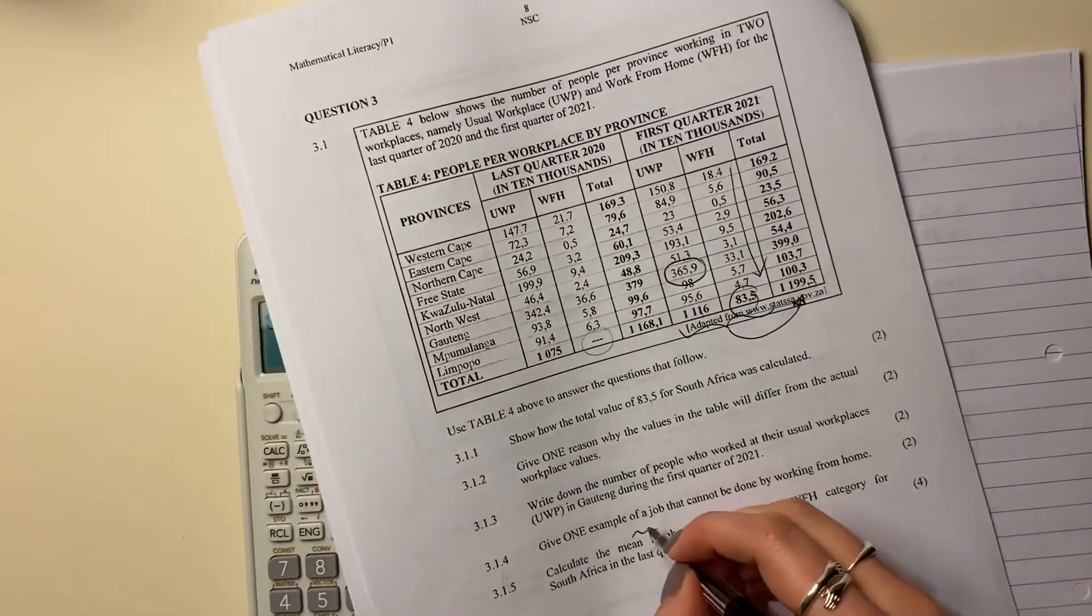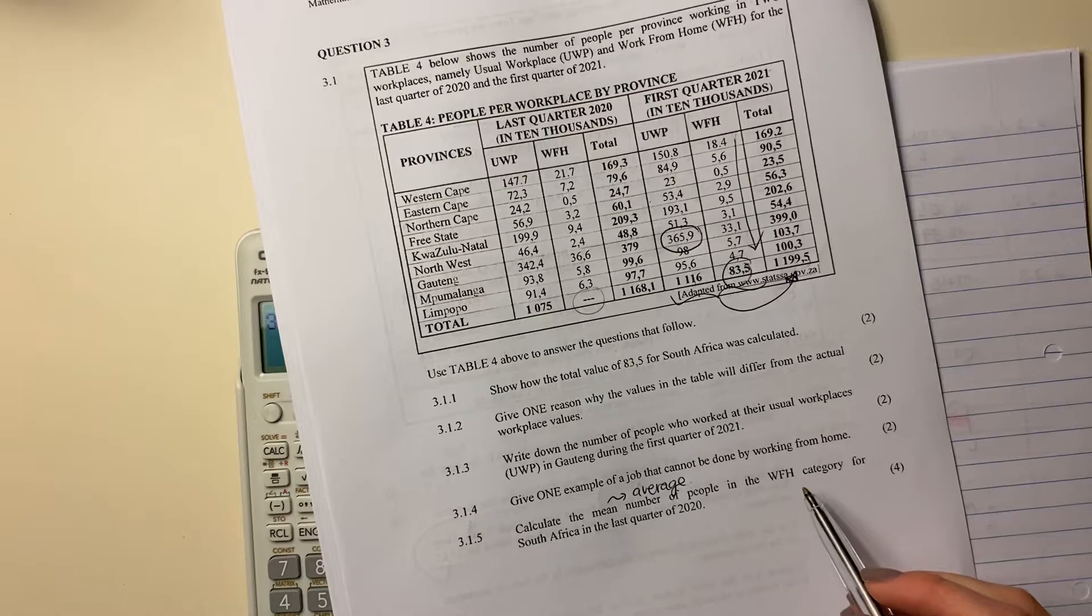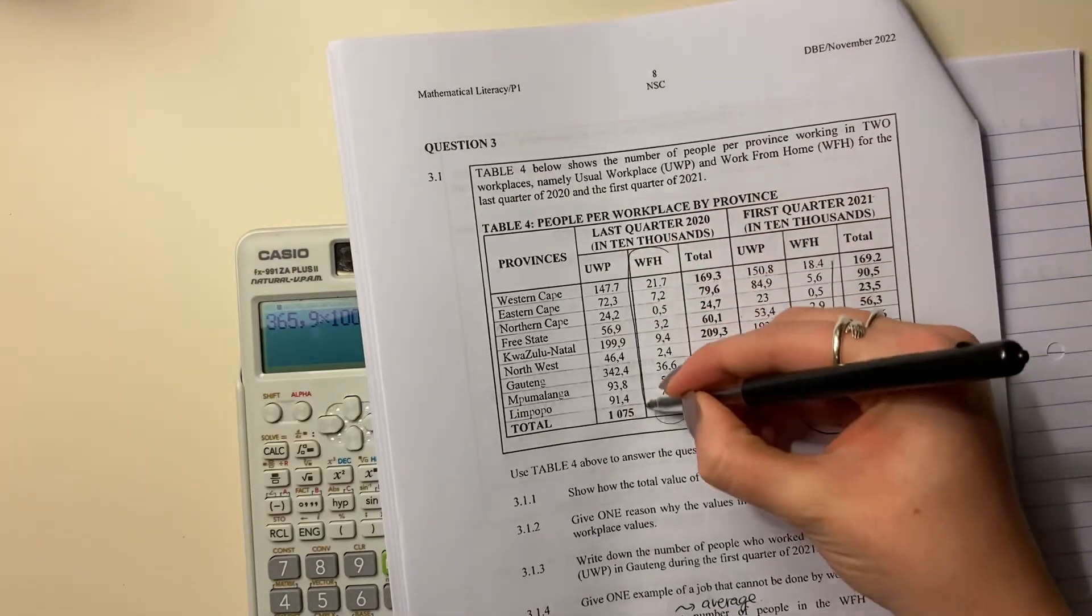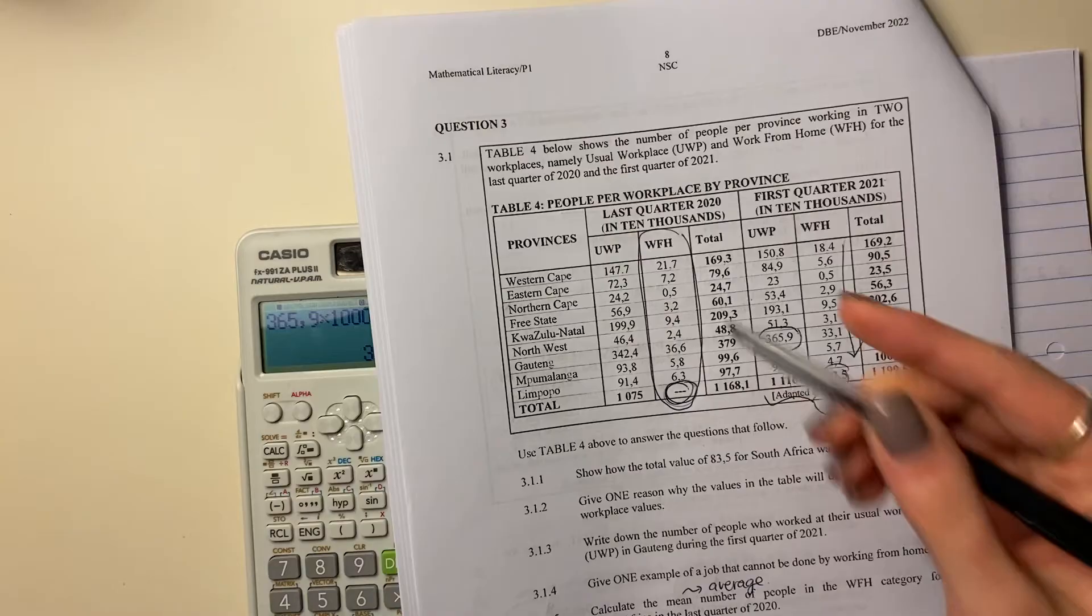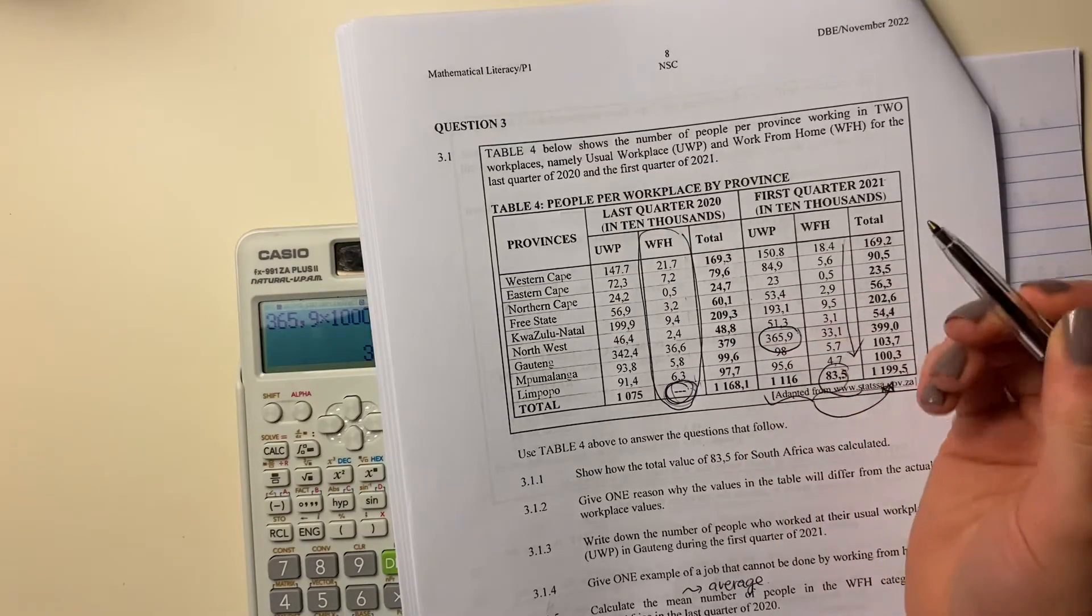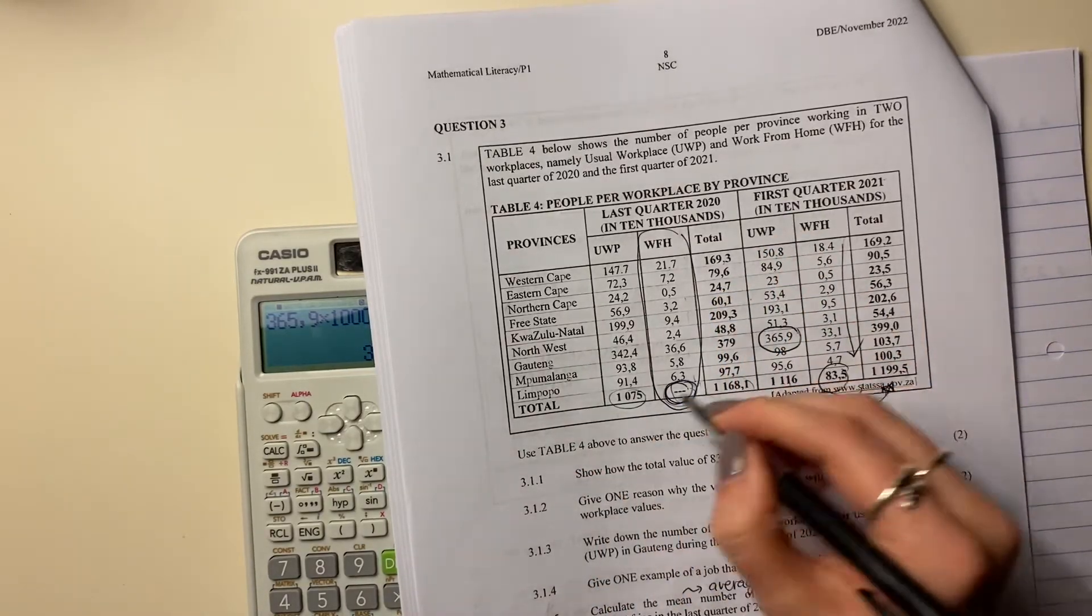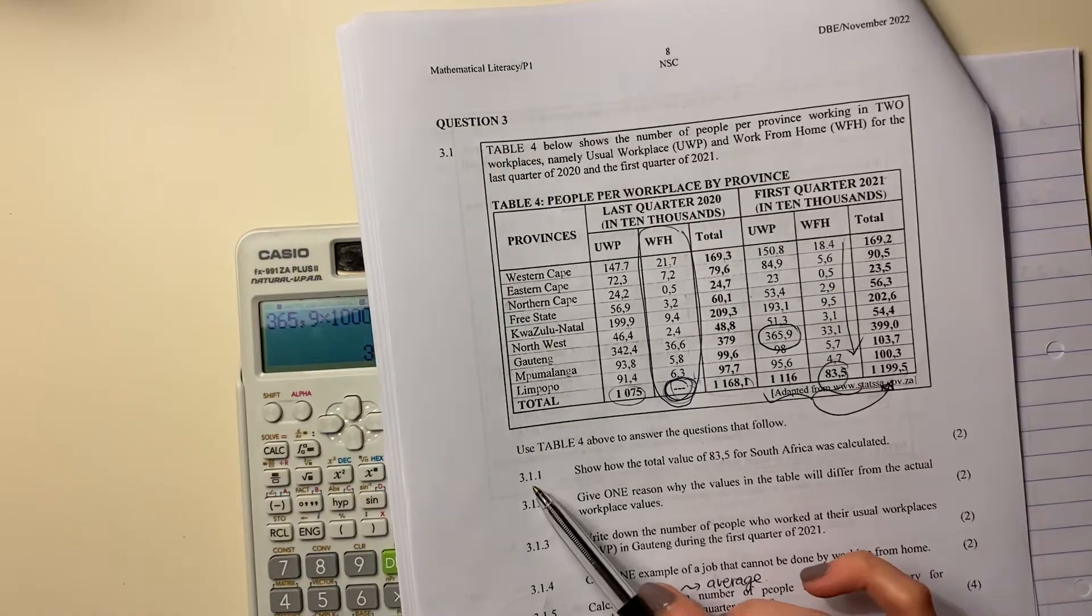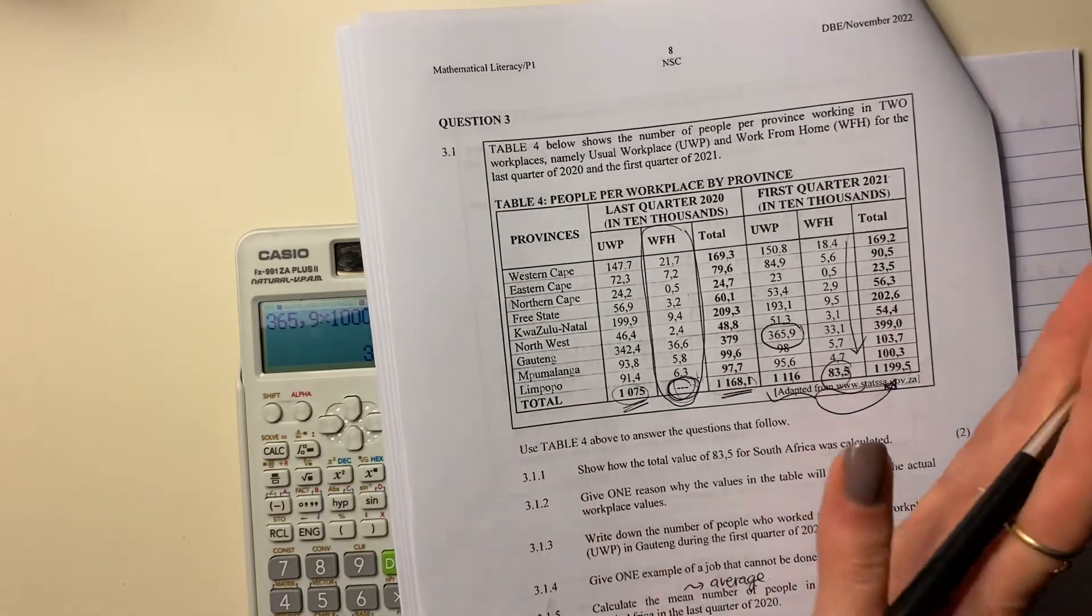Then it says, calculate the mean. When we see the word mean, what do we think? We think average. Calculate the mean number of people in the WFH, what's WFH? Work from home. Fantastic. Category for South Africa in the last quarter of 2020. So we're looking here, because that's where we're looking. And they basically want us to work out this amount there. So it's not too tricky, we just need to just add all of those together and then divide by the number. So this amount here, remember, is just the sum of all of these. Or what you could do, remember, you could take that, subtract that, and get that amount there. So there's two ways you can get it. I personally am going to do the other way because I just think it's a little bit easier.